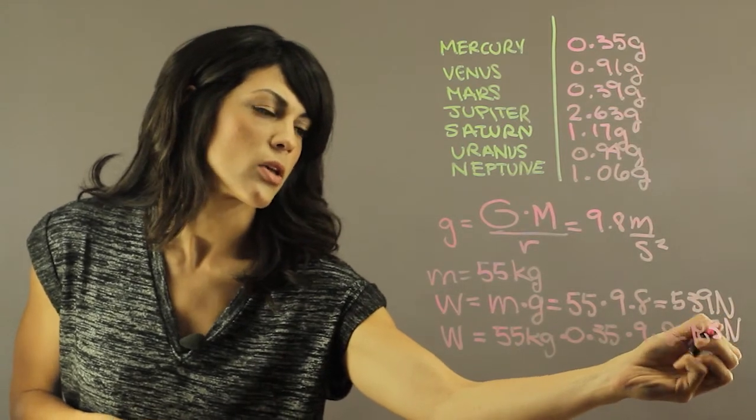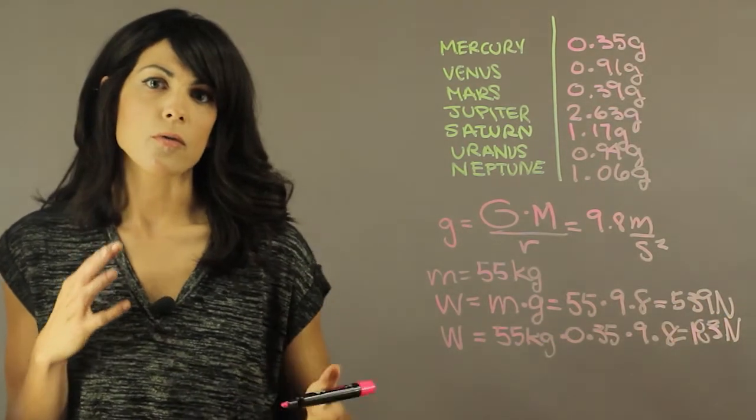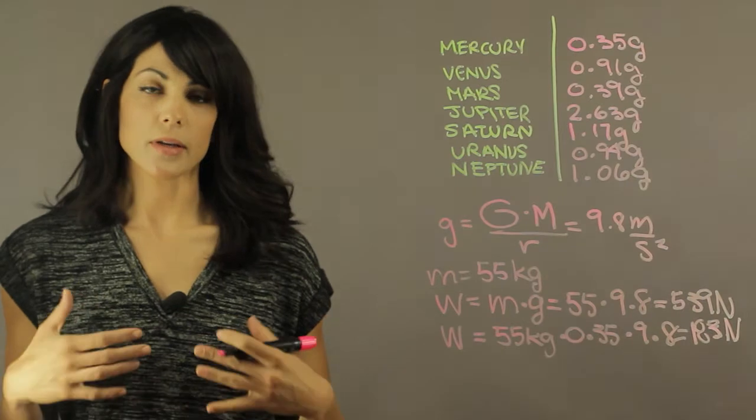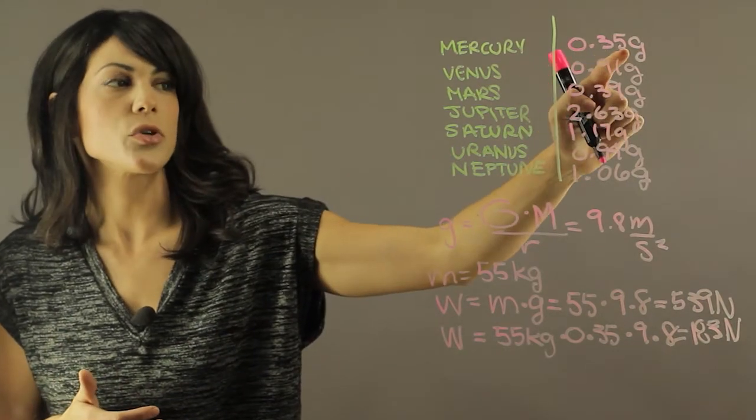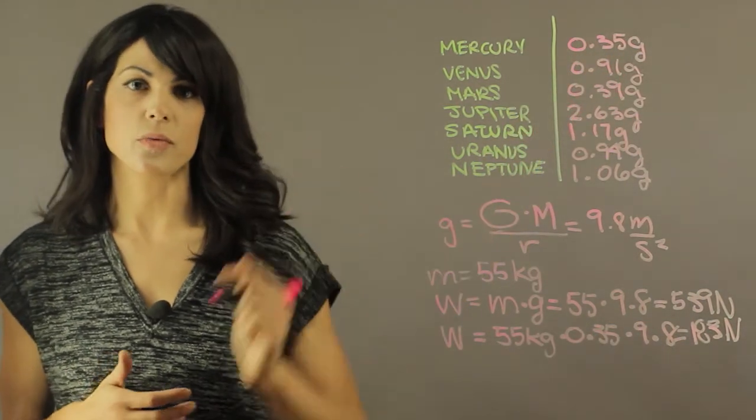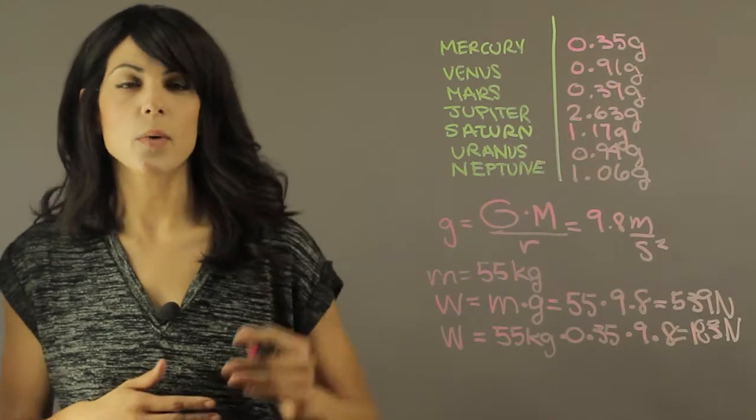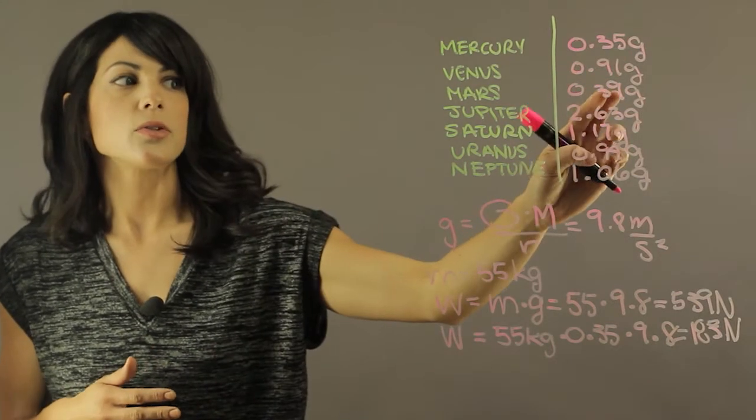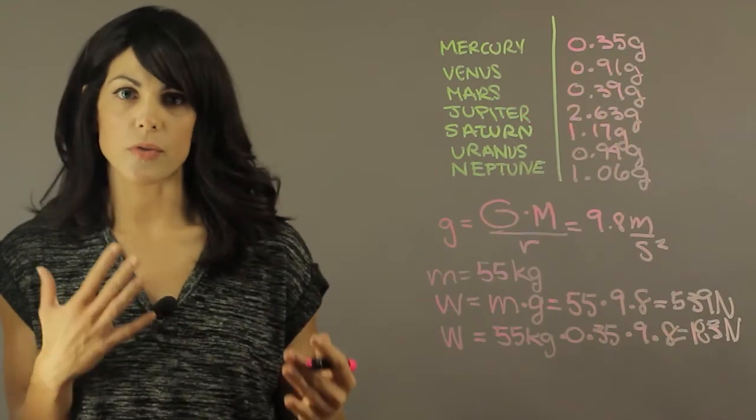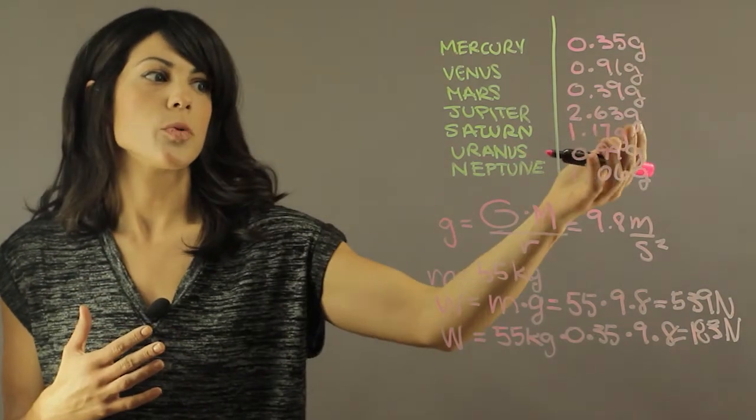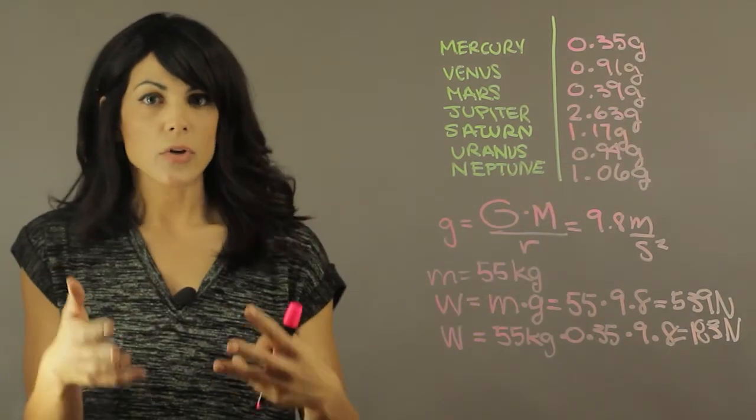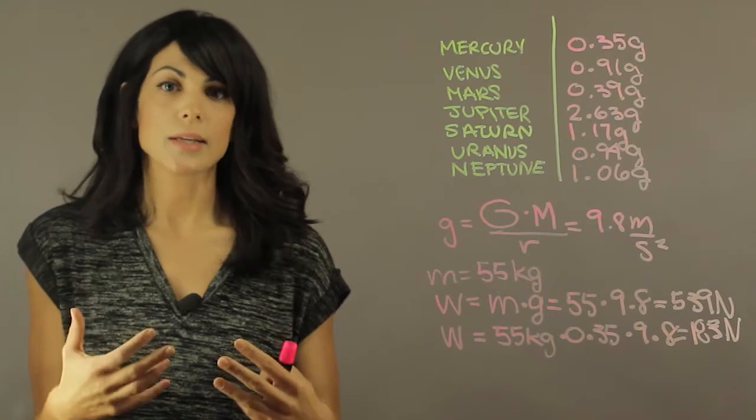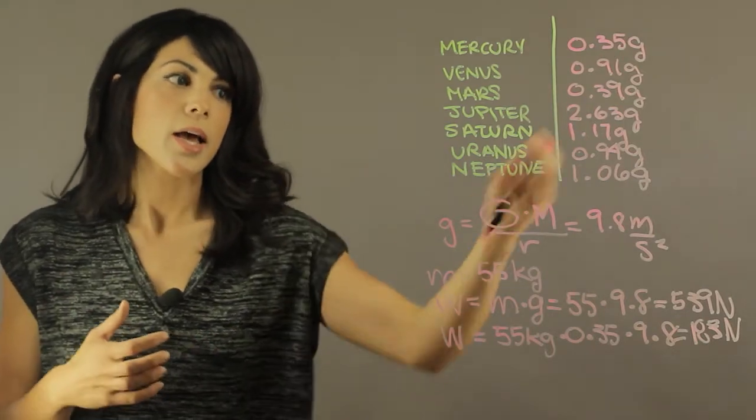As you can tell, how light you feel from planet to planet may be very different. This is 35% lighter than you would feel on Earth. This one is 91% lighter. This one is 39% of the weight on Earth. Jupiter, you have 263% of what you weigh here on Earth, and so forth.